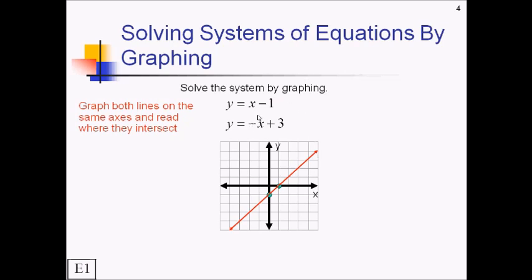Second one, we have y-intercept of 3. And for our slope, we're going down 1 over 1. And draw that line. So now we just have to figure out where they cross.